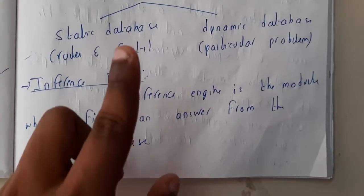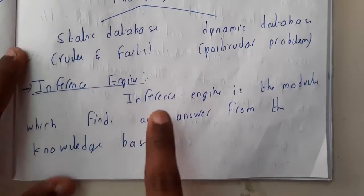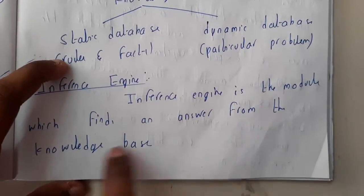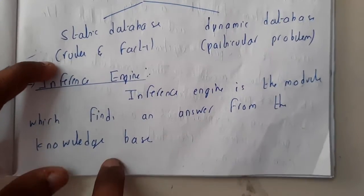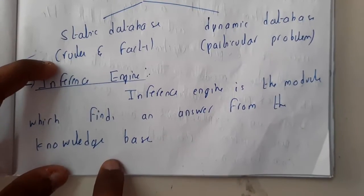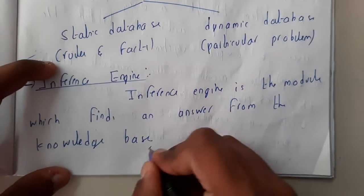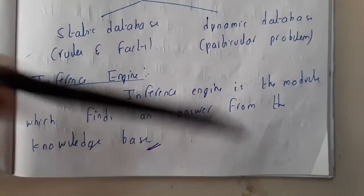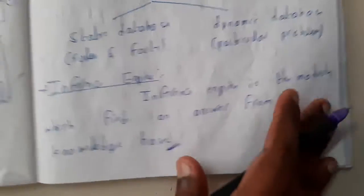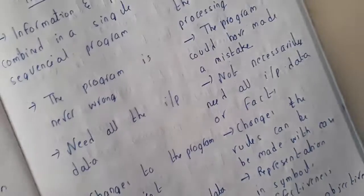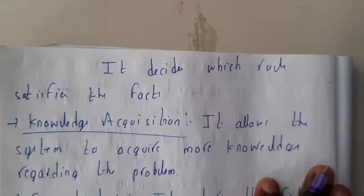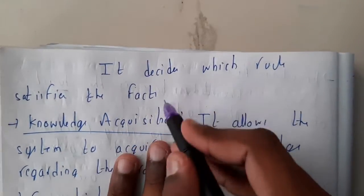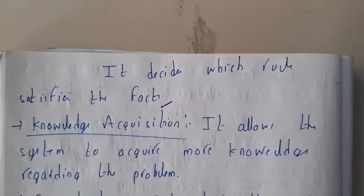The inference engine is the module which finds an answer from the knowledge base. It goes to the knowledge base, retrieves the data, and brings it out. It is the one which decides which rules and facts will satisfy the current query.